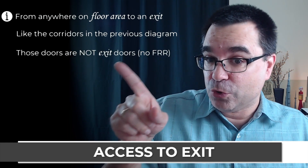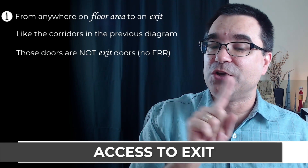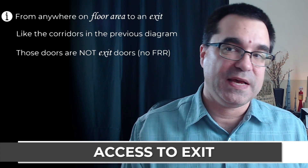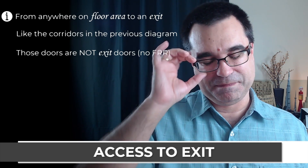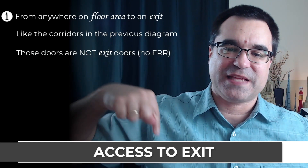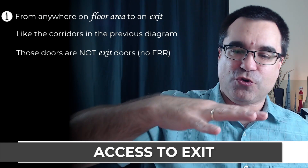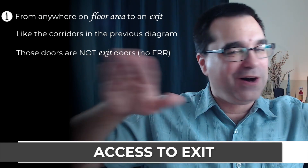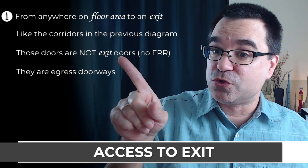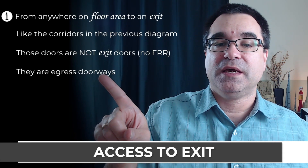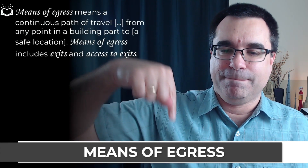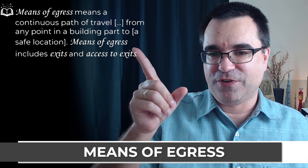The doors from those suites onto the corridor are not exit doors, so they typically have no fire resistance rating associated with them — because they're in the space called access to exit. Access to exit is the floor area up to but not through those exit signs. Those doors in the suites that open onto the public corridor are called egress doorways.